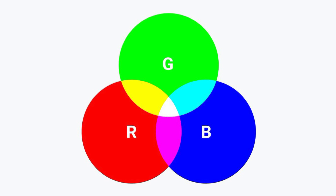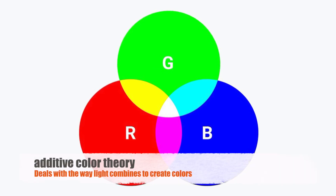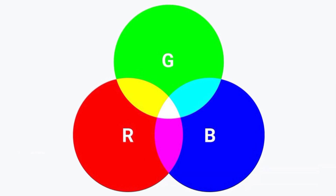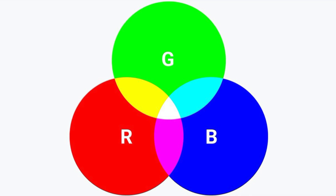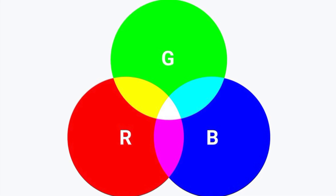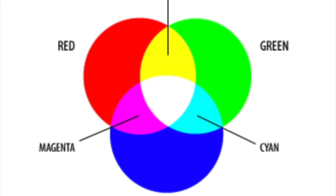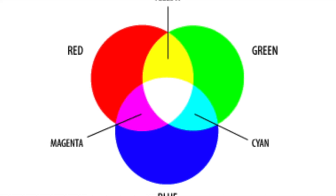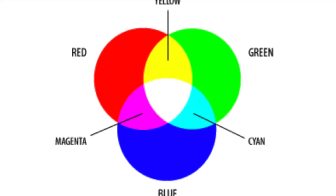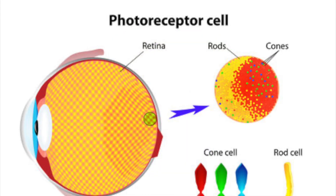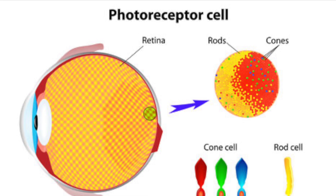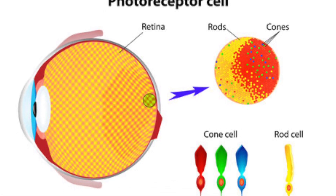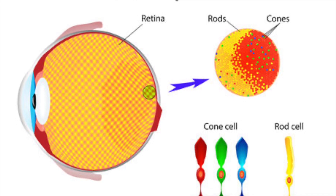Let's start with RGB. This model is based on the additive color theory, which deals with the way light combines to create colors. Imagine shining three different spotlights — one red, one green, and one blue — onto a white surface. Where these lights overlap, they create new colors. For instance, red and green lights combine to make yellow, green and blue create cyan, and blue and red make magenta. When all three lights combine, they produce white light. This occurs because our eyes have photoreceptor cells called cones that are sensitive to these three colors. By varying the intensity of each light, electronic displays can produce a wide spectrum of colors that our brains perceive as different hues.